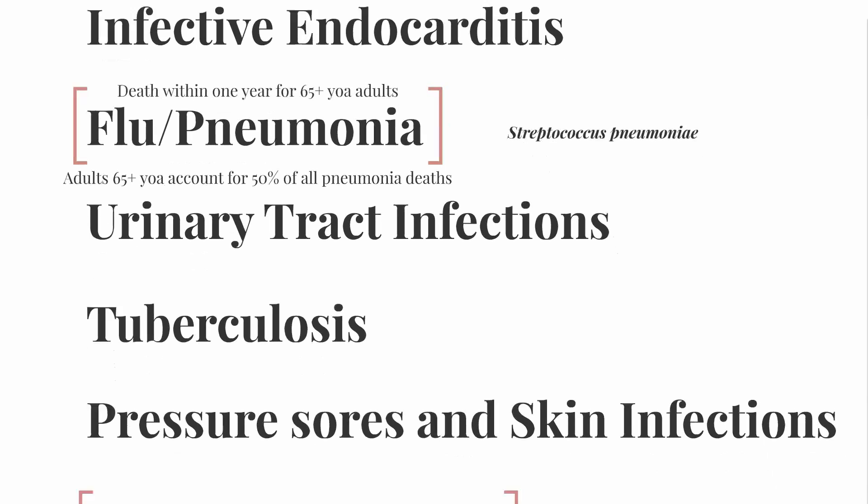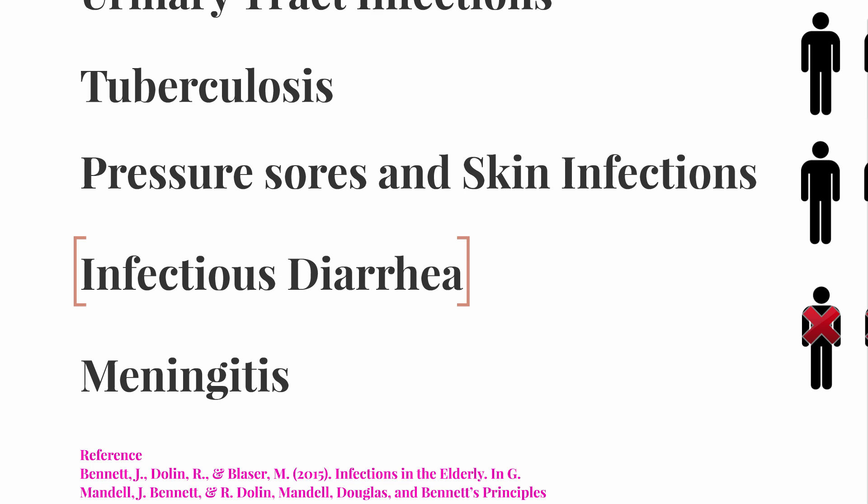Moving on to infectious diarrhea: 51% of diarrheal deaths occur in people 74 years of age and older. Among the main culprits in long-term care facilities are C. difficile and norovirus-mediated gastroenteritis. I'm not going to go in-depth into these two pathogens, but I recommend that you do a quick search and read up on them, because these pathogens can absolutely devastate communities and hospital units.